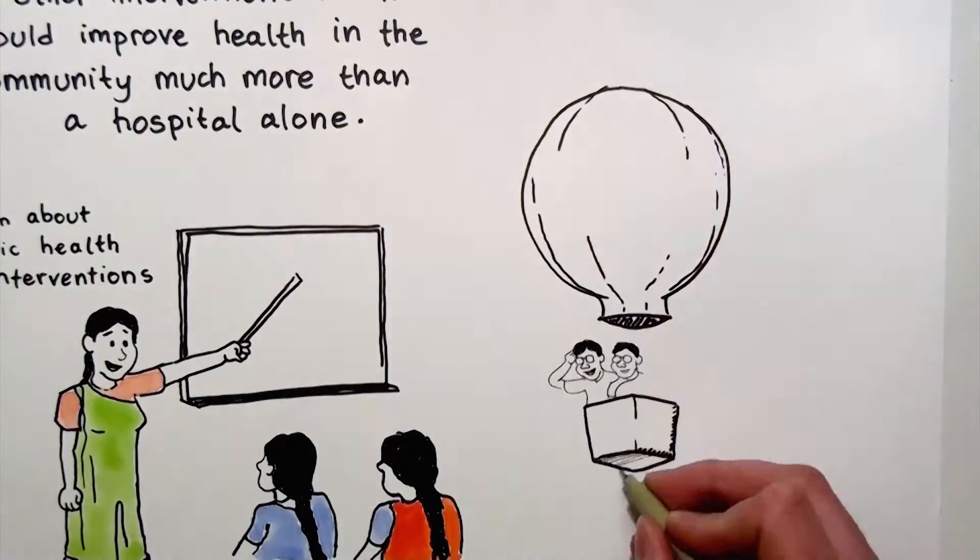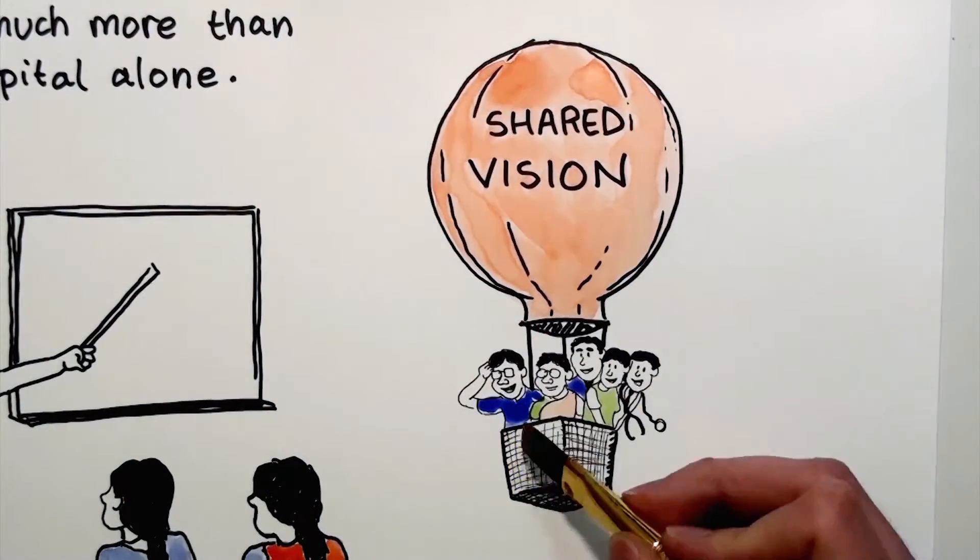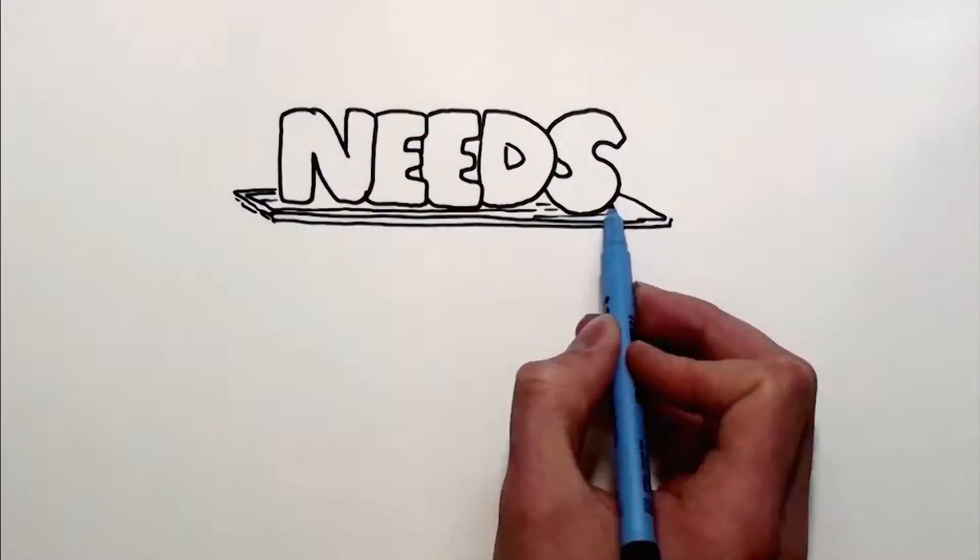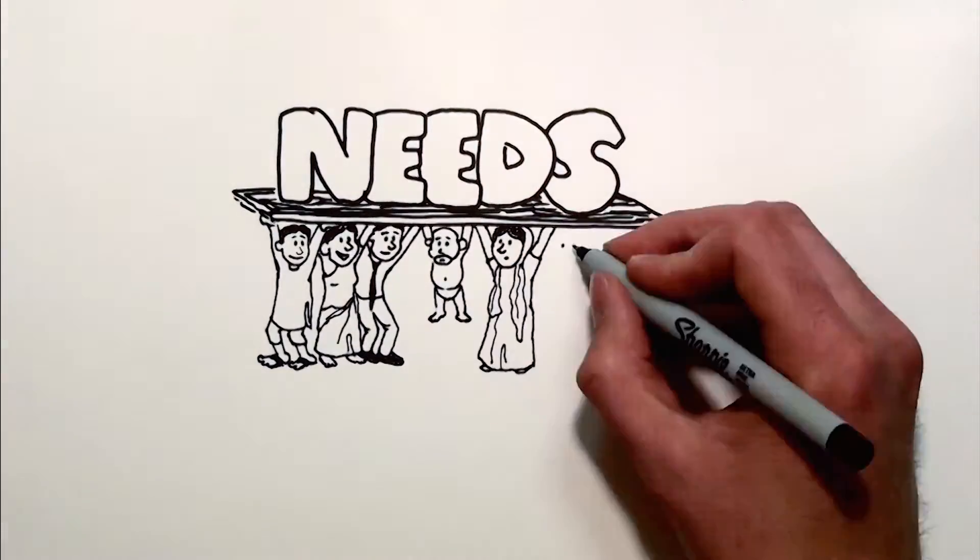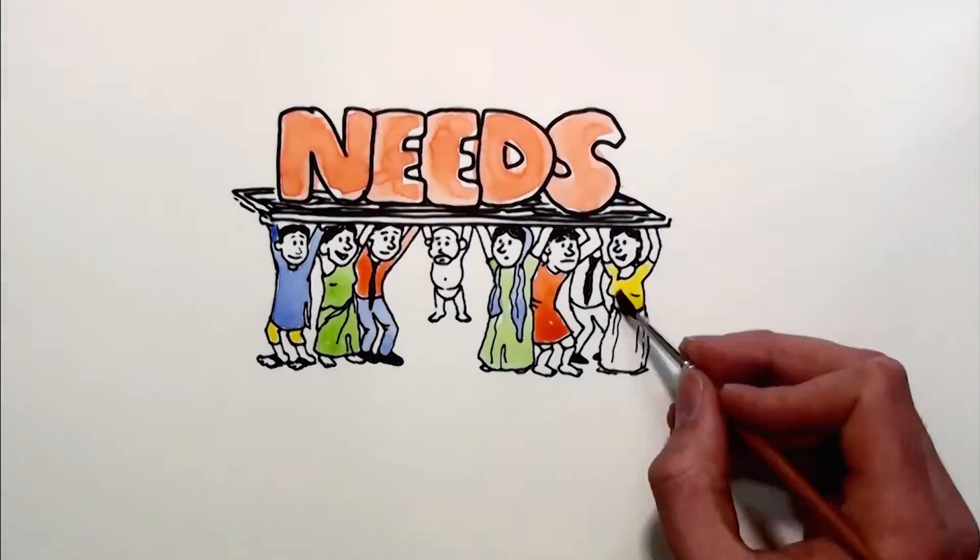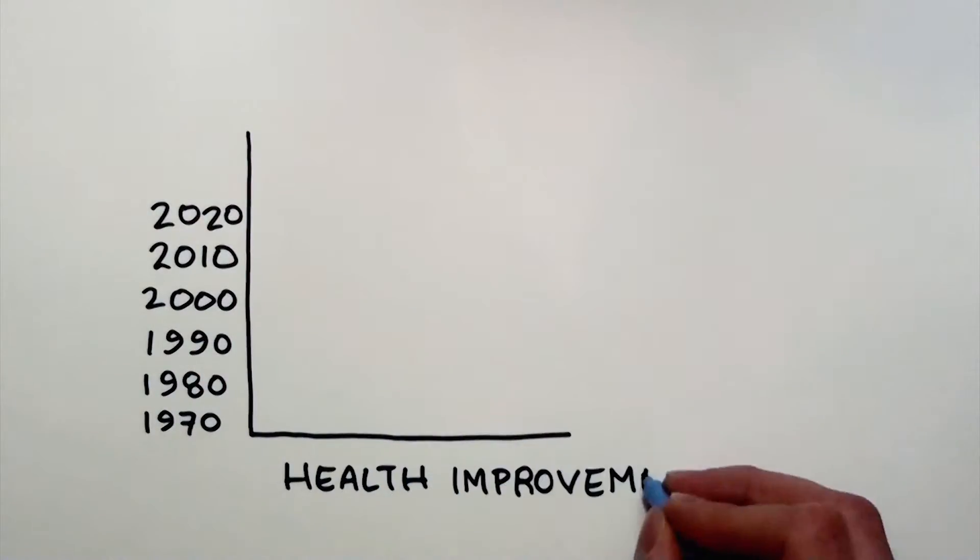This program led to a shared vision between the Arolis, community members, and health experts that enabled them all to reach their health improvement goals. Over the last few decades, this systems thinking approach in Jamket, India led to a number of other programs to meet the needs of the local communities. As a result, there have been incredible health improvements.